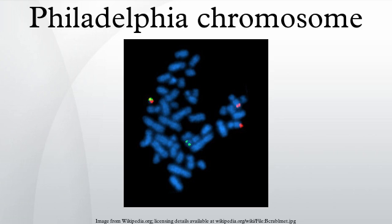A potentially curative, but risky, option for pediatric Ph+ ALL or Ph+ CML is bone marrow transplant or cord blood transplant, but chemotherapy is favored by some for achieving first remission. For some, bone marrow transplant from a matched sibling donor or a matched unrelated donor may be favored when remission is obtained. Cord blood transplant is favored by some when a 10/10 bone marrow match is not available, and may have advantages including a reduced incidence of graft-versus-host disease. However, cord blood transplant sometimes requires longer periods of time for engraftment, which may increase the potential for complications due to infection.